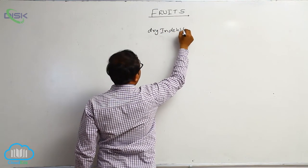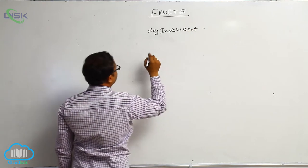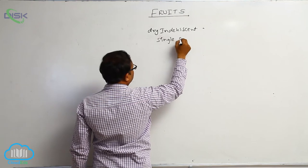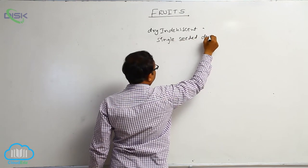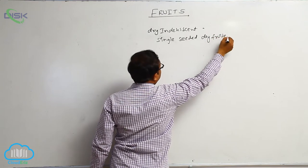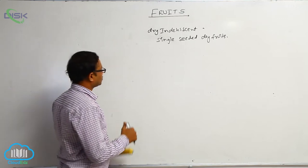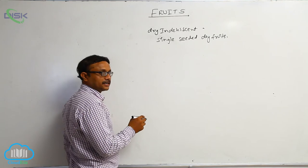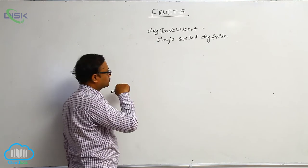Dry indehiscent fruit. In dry indehiscent fruit, most of these fruits are single seeded dry fruits. In dry indehiscent fruits, the pericarp does not split at the time of maturity. So they are known as dry indehiscent fruits.